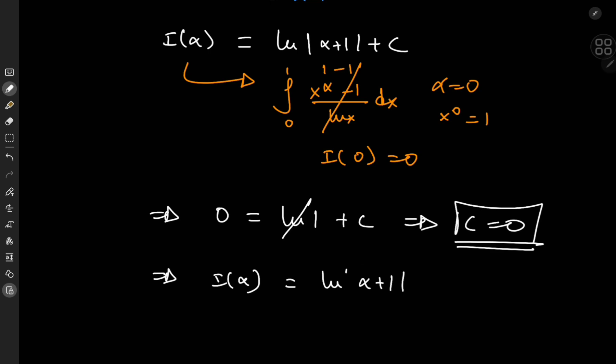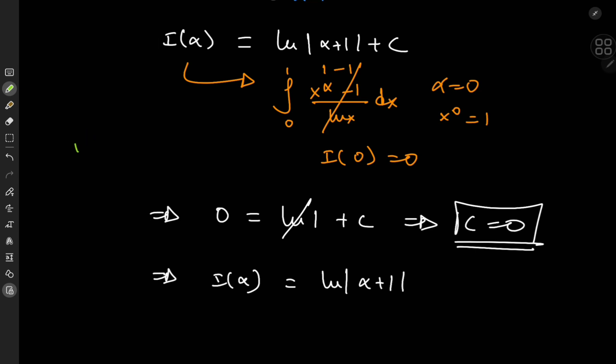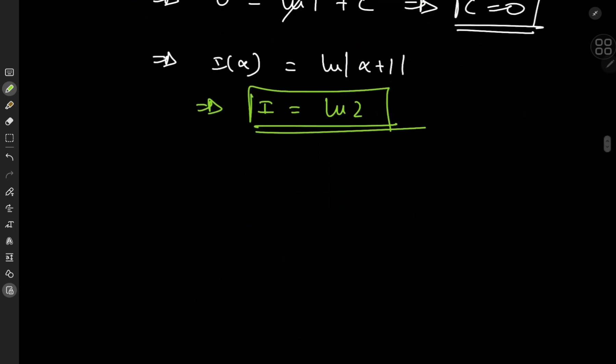Okay, cool. And what exactly was my target integral? Well, we were interested in the integral from 0 to 1 of x minus 1 divided by log x dx. So that means alpha equals 1 for the target case. So this implies that the target integral i equals the logarithm of 2. And now for the non-Feynman way.